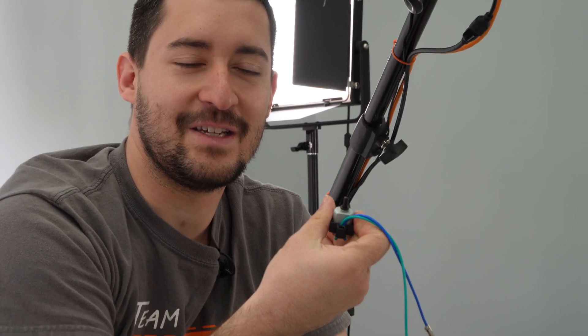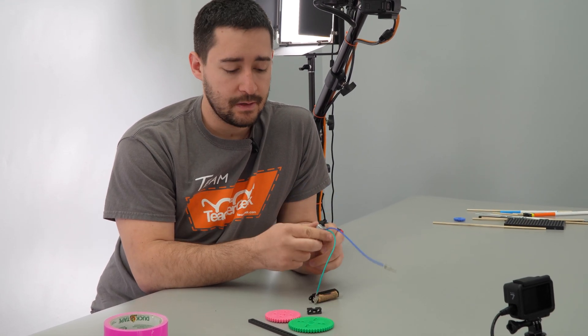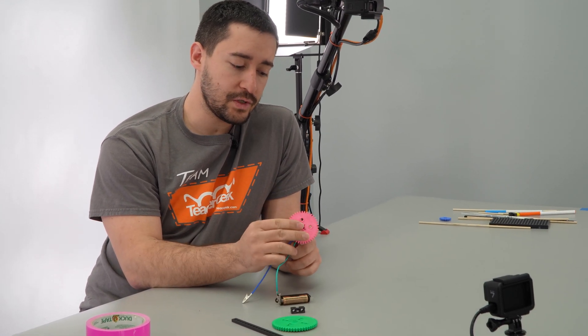Hear that? It's spinning. One way to make WiggleBots move is to make them vibrate. Now that we have our motor spinning, can we get it to vibrate? Try adding some different components to it.